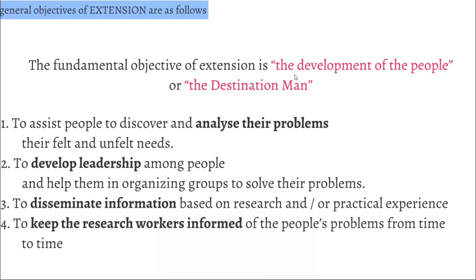Expression of the ends towards which extension works are directed are the objectives of extension program. Development of the people is the fundamental objective of extension. In general, the objectives of an extension are: to assist people to discover and analyze their own problems, to develop leadership among the people, to disseminate information important for agriculture, and to keep the research workers informed about farmer problems from time to time.